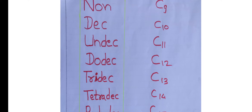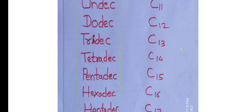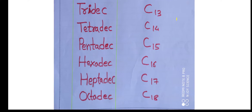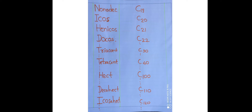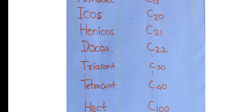C11 is undec, C12 dodec, C13 tridec, C14 tetradec, C15 pentadec, C16 hexadec, C17 heptadec, C18 octadec, C19 nonadec, C20 icos, C21 henicos, C22 docos, C23 tricos, C24 tetracos, C25 pentacos.